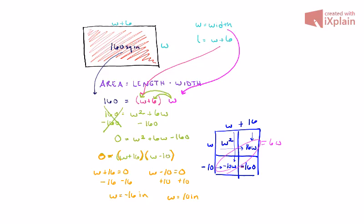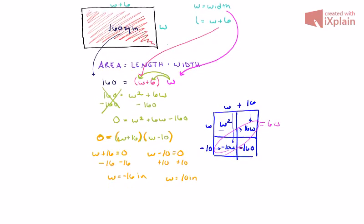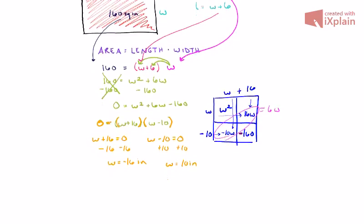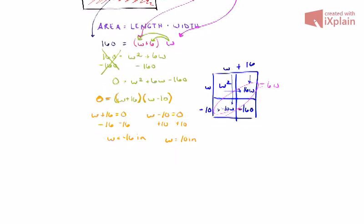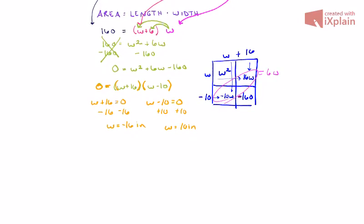So again, in this particular case, we need to think of the context of the problem. We are talking about the dimensions or the measurements of this griddle. So I would basically say we can look at this one and rule it out, because it is a negative number. We can't have a griddle that is negative 16 inches wide. However, we can have a griddle that is 10 inches wide.